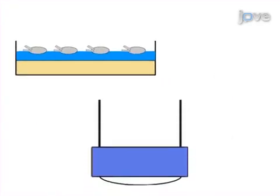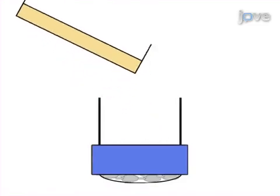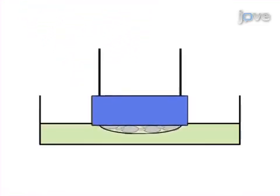In parallel, fly population cages are used to harvest, fix, and permeabilize embryos of the desired developmental stage.